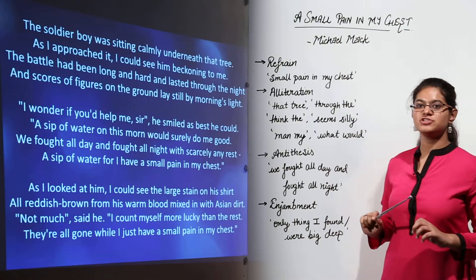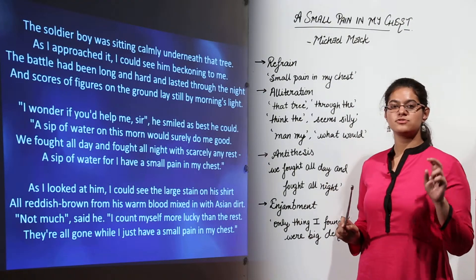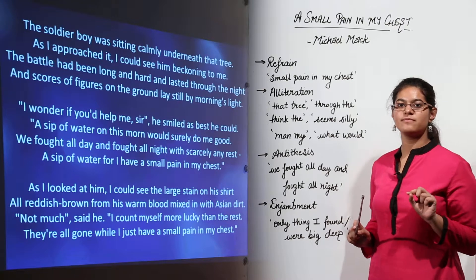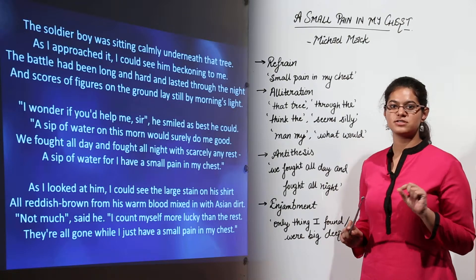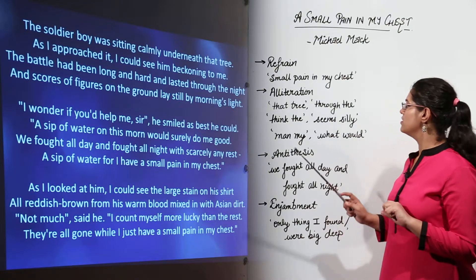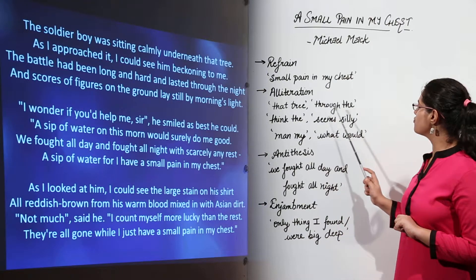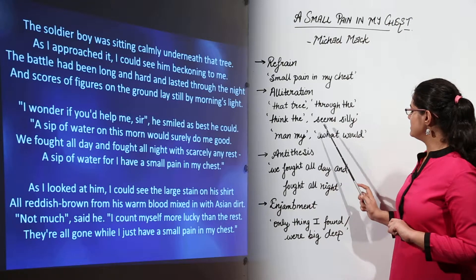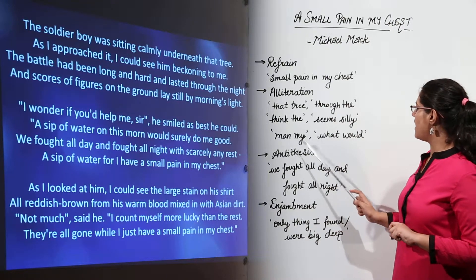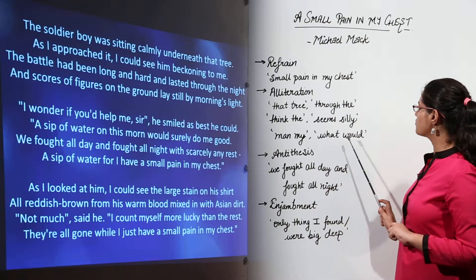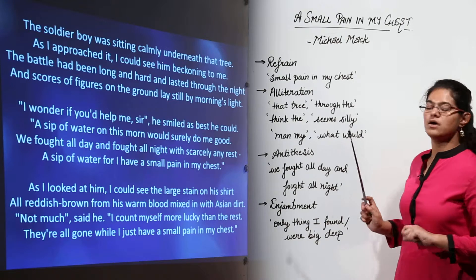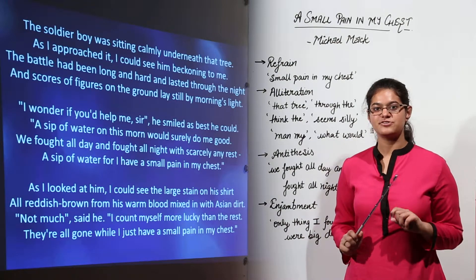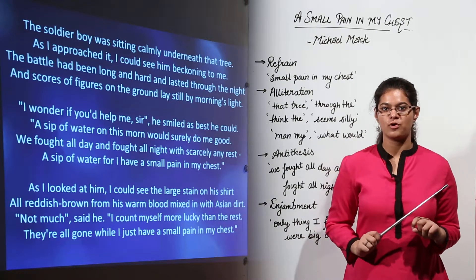Alliteration is when two words consecutively begin with the same consonant sound. Examples from the poem include: 'so that tree,' 'through the,' 'think the,' 'seem silly,' 'man my,' 'what would,' and 'mother my.' These are all examples of alliteration in the poem.